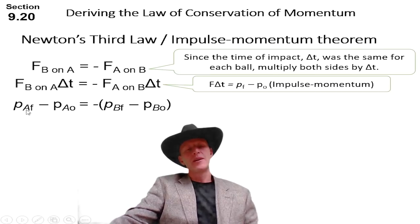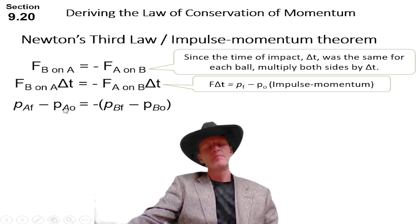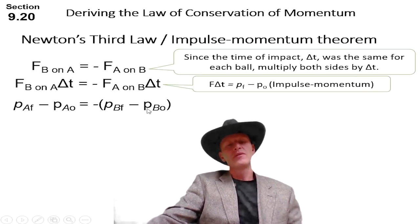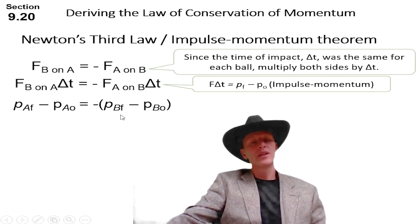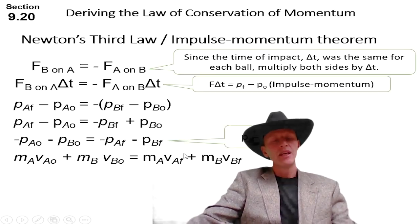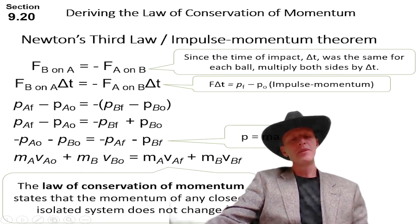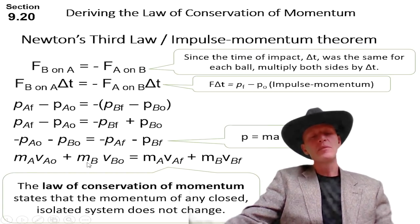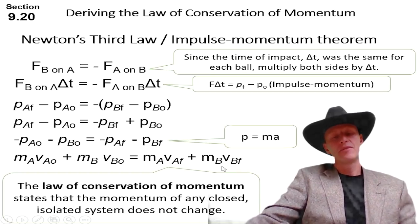So if we change both sides into the change of momentum, then we have the momentum of A at the end, that's what the F means, final, minus the momentum of A at the beginning. It's going to equal the opposite of this difference over here of object B. Don't get too thrown, I'm going to simplify this equation for you and tell you exactly how to work it in a minute. But if we just distribute the negative, move some things around, change the P's to M's, we have a nice little equation that we call the law of conservation of momentum. And it states that momentum of any closed isolated system does not change. And it basically says that this momentum that the objects have before the collision is going to equal the momentum of the objects after the collision.